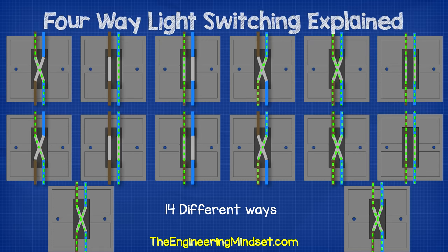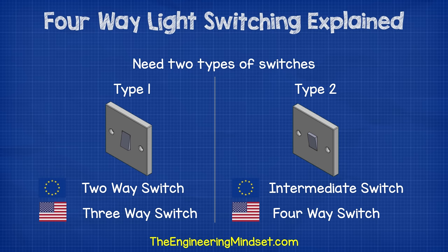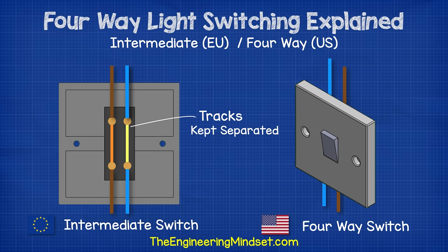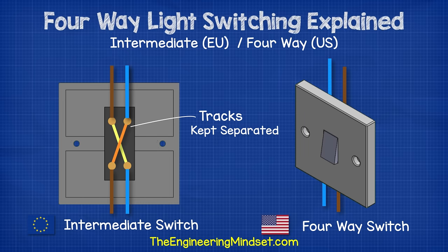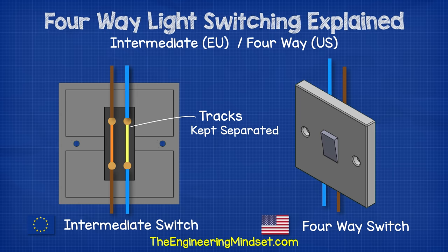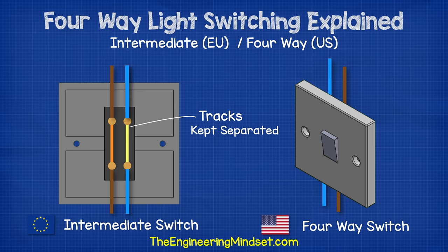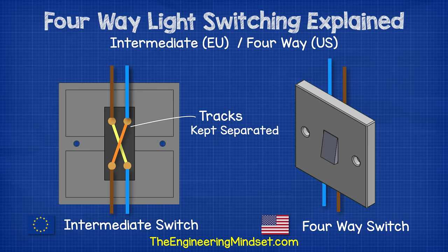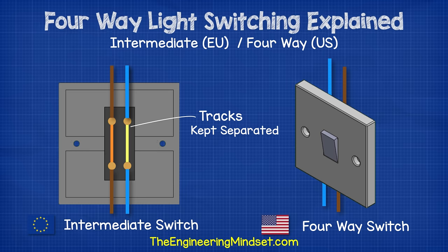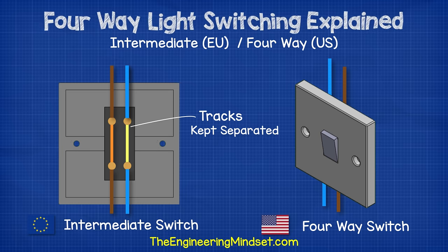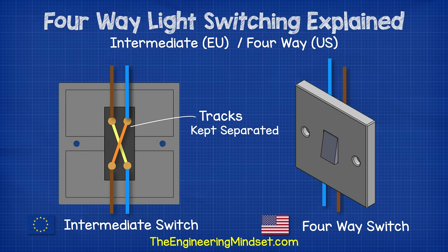I'll leave some links down in the video description for where you can buy both of these switches online cheaply. These intermediate or four-way switches have a very clever design. The switch has a mechanical component inside, which means that when the switch is flipped, it crosses its tracks to change the direction. These two tracks do not touch — they are kept completely separated. By crossing its tracks to change the direction, we can therefore divert the electricity and make or break the circuit.